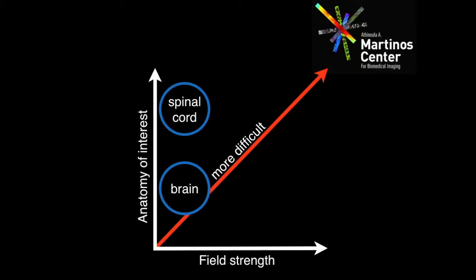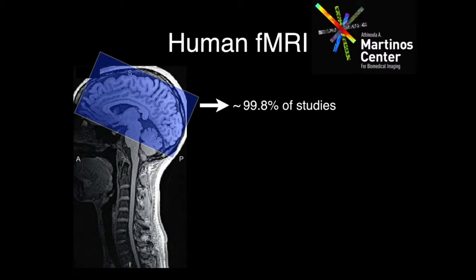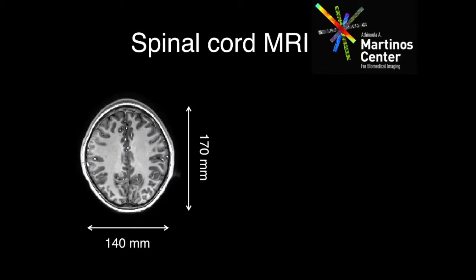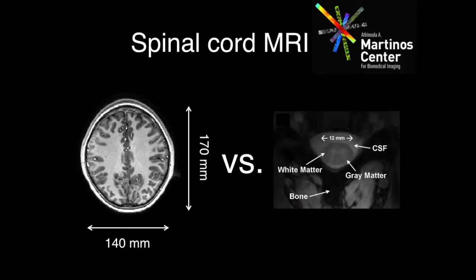In terms of fMRI, about 99.8% of studies are on the brain and associated structures, which means that in all the years of fMRI, there are still only about 100 papers doing fMRI of the spinal cord — about two papers out of every thousand. This is a really, really small fraction. So why? First of all, the size. A typical brain has certain dimensions, and the spinal cord is about an order of magnitude smaller.